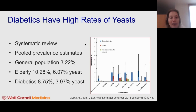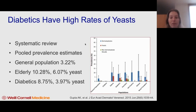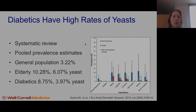this was highest in the elderly, and the second most common population to have yeast were diabetics. So it's important to note that diabetics may have different organisms than the general population, and that may affect our treatments.